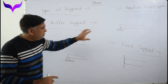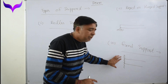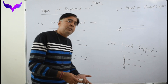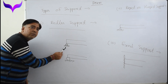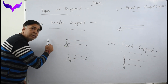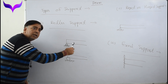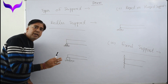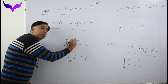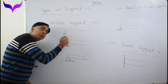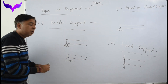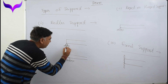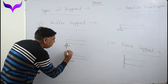Now we will see how many reactions develop at each support. In the case of a roller support, it can easily move in the horizontal direction, so there is no horizontal reaction. It can rotate about this point, so there is no moment reaction. But it does not move in the vertical direction, so only one reaction will act — the vertical reaction.